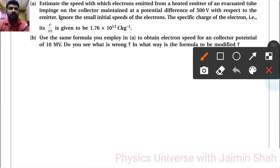Estimate the speed with which electrons emitted from a heated emitter of an evacuated tube impinge on the collector maintained at potential difference V equal to 500 volt with respect to the emitter. Ignore the small initial speeds of the electrons.